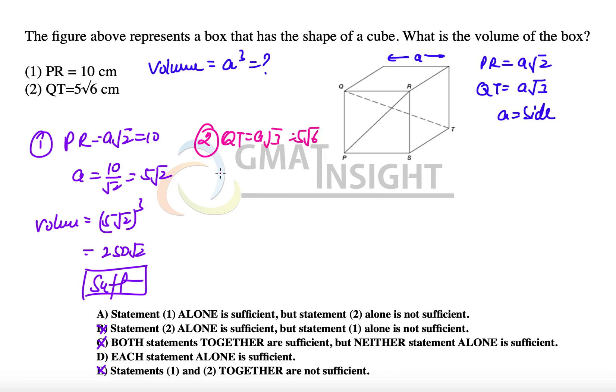We simplify this once again. So, A root 3 is equal to 5 times of root 2 multiplied by root 3 because root 6 can be broken down into root 2 into root 3. So, we get A is equal to 5 root 2. That means the volume, which is equal to A cube, is equal to 250 root 2. And therefore, the second statement alone is also sufficient.